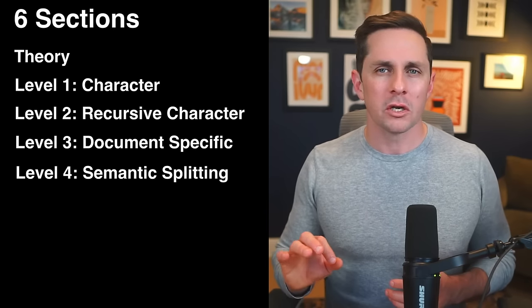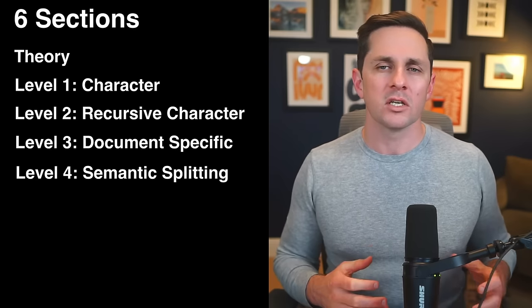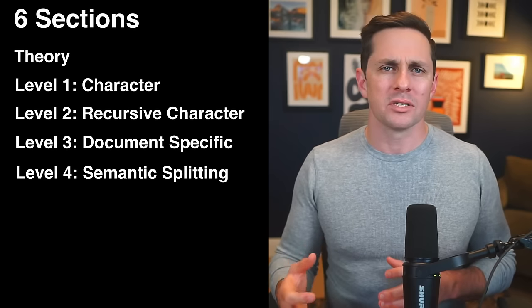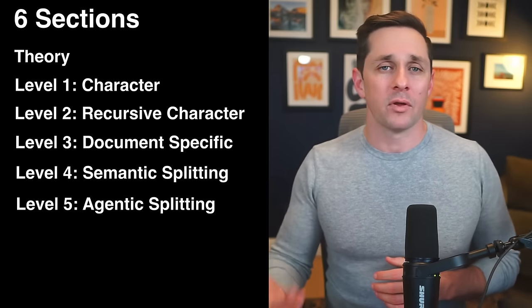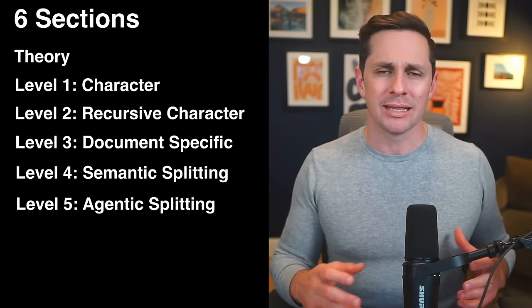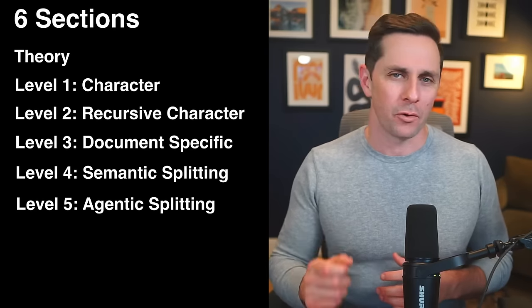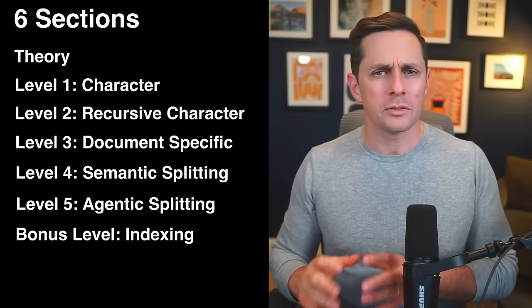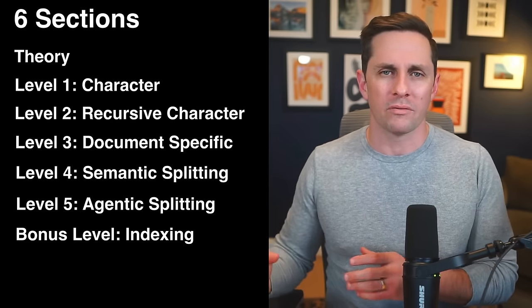In level four we're not just looking at where the text sits — instead we delve into the what and the why of the text, the actual meaning and context of these chunks. It's like categorizing books by genre and theme instead. Level five covers agentic splitting — an experimental method where you build an agent-like system that reviews your text and splits it for you. There's also a bonus level with advanced tactics that go a bit beyond text splitting but are important for retrieval in general. My goal isn't to prescribe the best method; it's to expose you to different strategies so you can make a more informed decision.